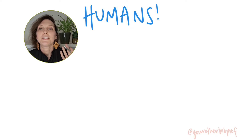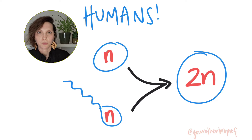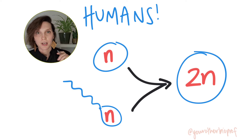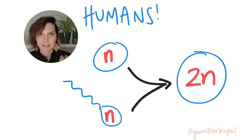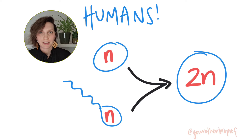Humans are diploid organisms. We inherit one set of chromosomes from the maternal side through the egg, and another set of chromosomes paternally via the sperm. So in our somatic cells — our non-gamete cells of the body — humans have two complete sets of chromosomes typically.